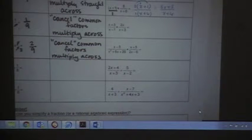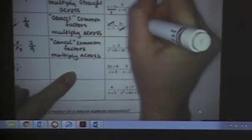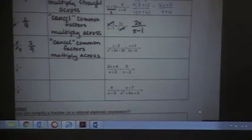So, on number 3, cancel common factors. X plus 3. My x plus 3s are common, so I can cancel them and multiply across. All right. Okay. So far, so good. It's easy, right?